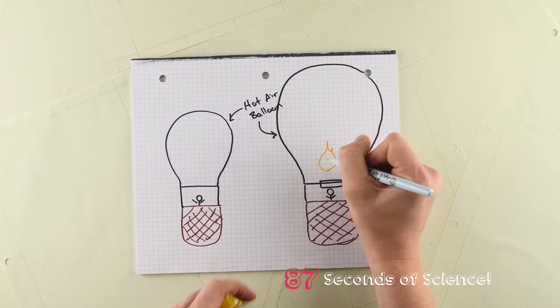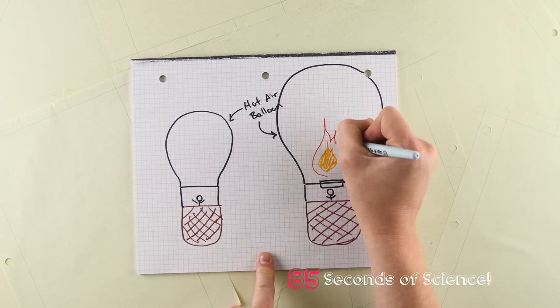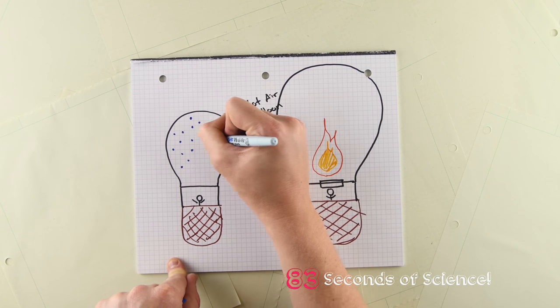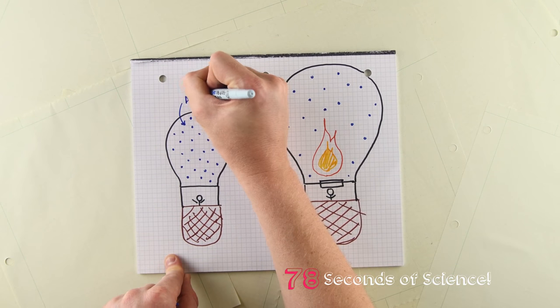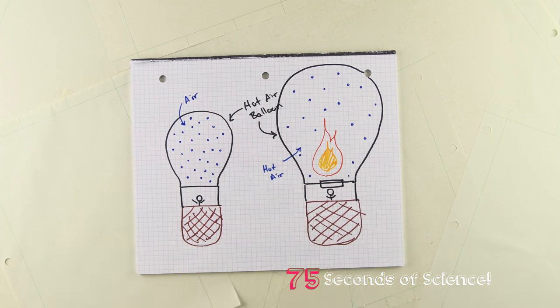You might have heard that heat rises, and that's true. When you heat a material - solid, liquid, or gas - you're adding energy to the molecules in that material, weakening the bonds that hold it together and allowing it to expand. When that material expands, its density decreases.